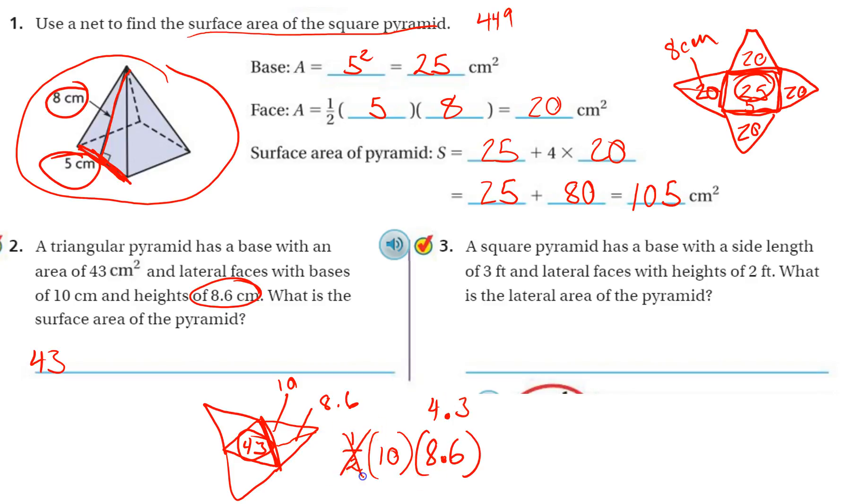So I use the 1 half to multiply by the 8.6, so now I'm left with just 10 times 4.3. And since I'm multiplying by 10, I know I can just move the decimal over 1, and that will give me my answer. So if I move the decimal over 1, I get 43.